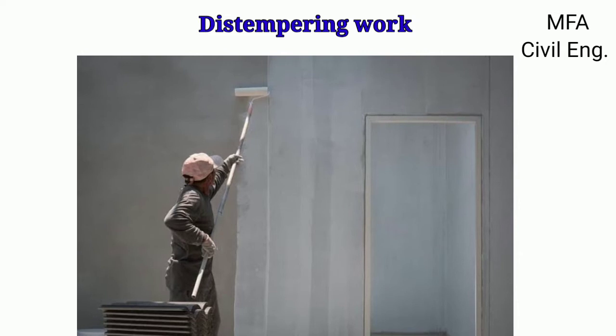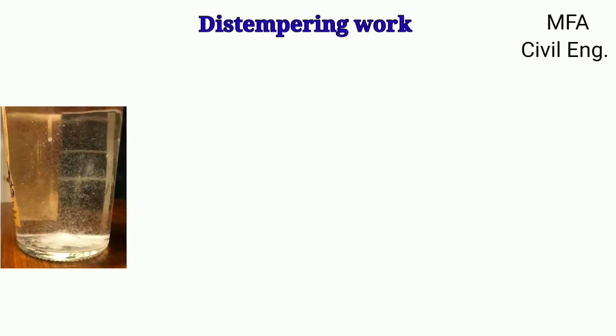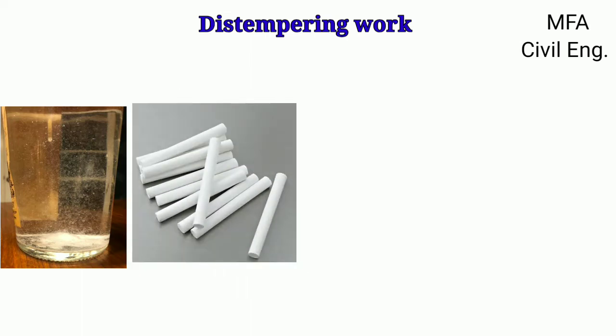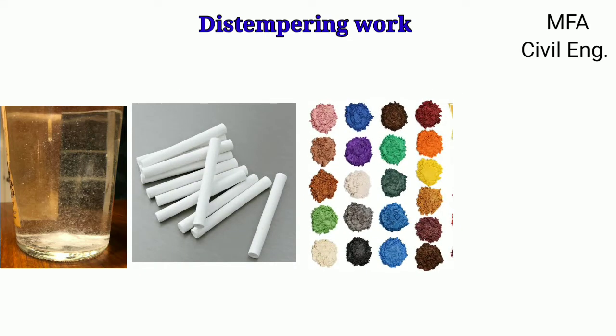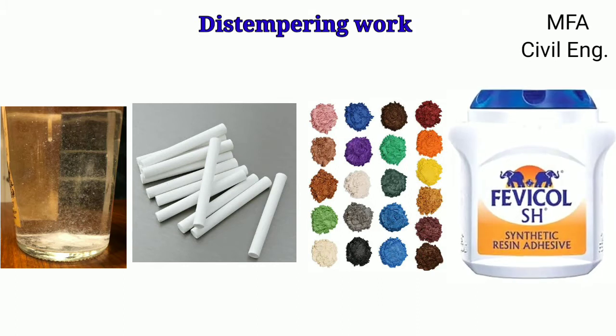Hello everyone, my name is Fazal and you are watching MFA Civil Engineering. The method of applying distemper over the internal wall surface of a house is called distempering. Distemper is a water paint made up of various ingredients: a carrier that is water, a base that is chalk, a pigment that is a color particle, and a binder that is glue.